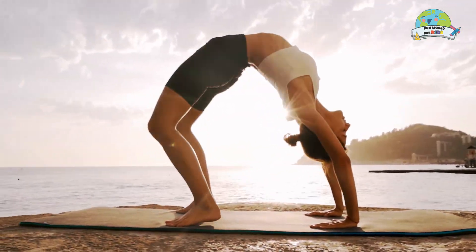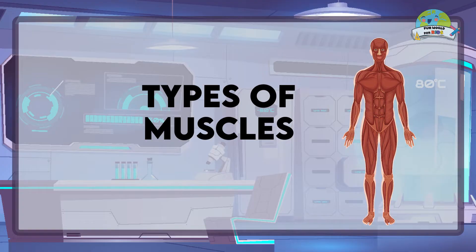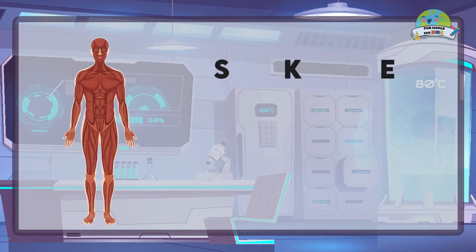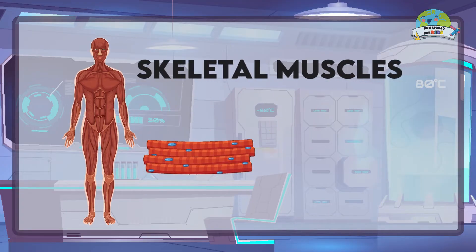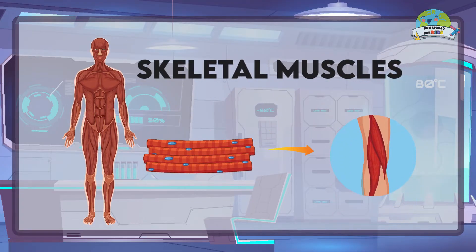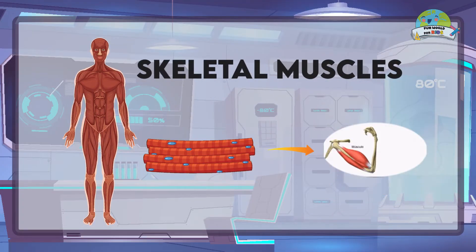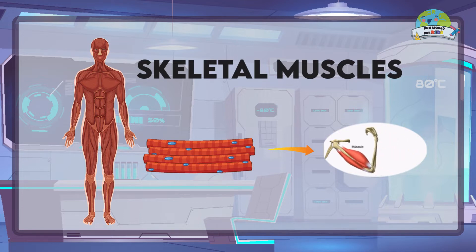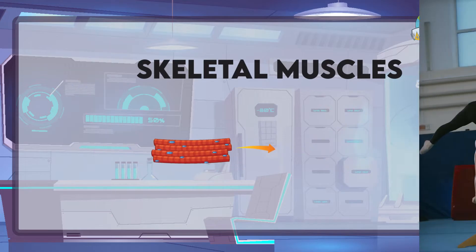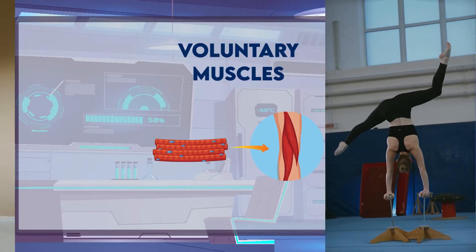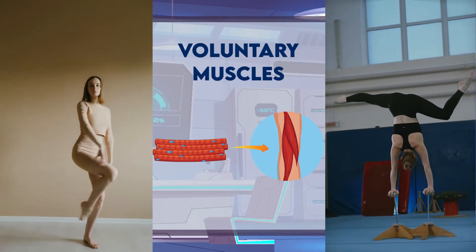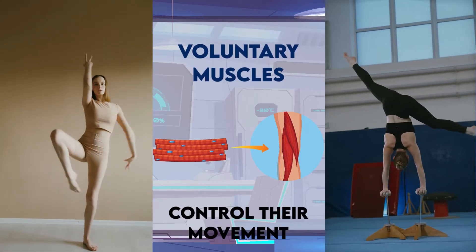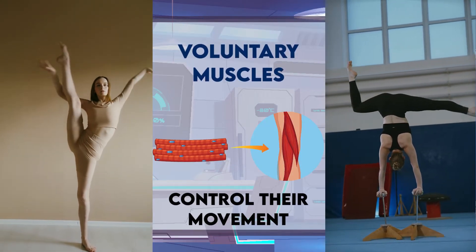There are three types of muscles. Skeletal muscles — they are the ones that connect with the bones and allow the displacement or movement of the extremities. They are voluntary muscles, which means that we can control their movement.